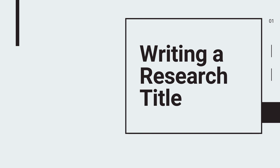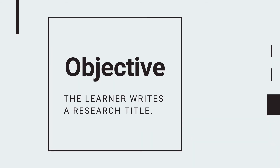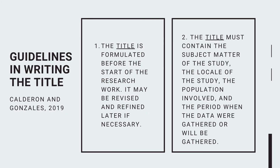The next lesson is about writing a research title, where you are expected to come up with your own research title. There are guidelines in writing the title according to Calderon and Gonzales in 2019. First, the title is formulated before the start of the research work and may be revised and refined later if necessary. The first thing written in a paper is the title, but of course you should have already read existing studies and literature before coming up with it. Throughout the study, accept that the title may change, especially after the results are out. Number two, the title must contain the subject matter of the study, the locale of the study, the population involved, and the period when the data were or will be gathered — though not all of these need to be present in the title.